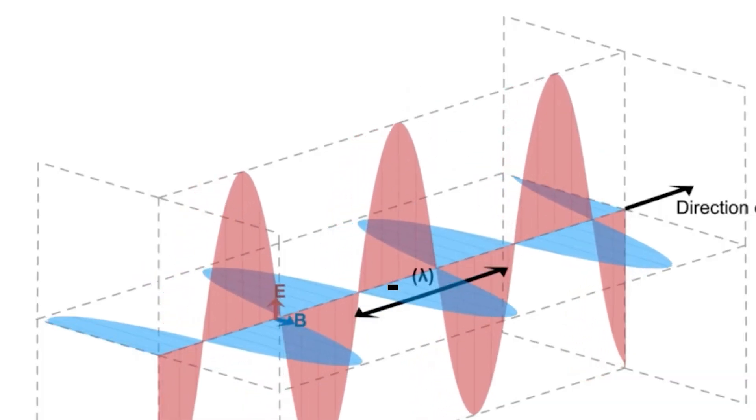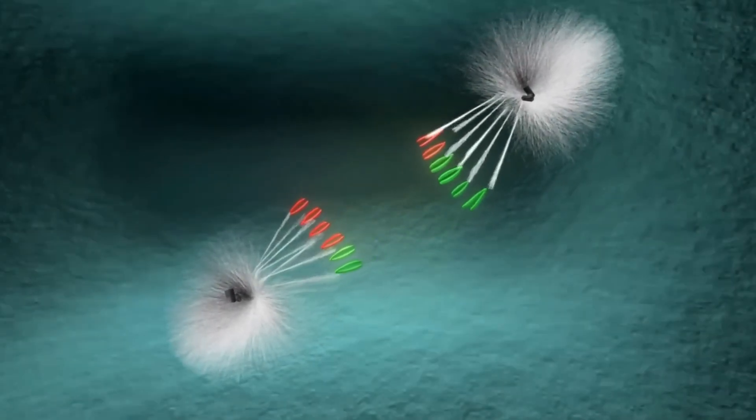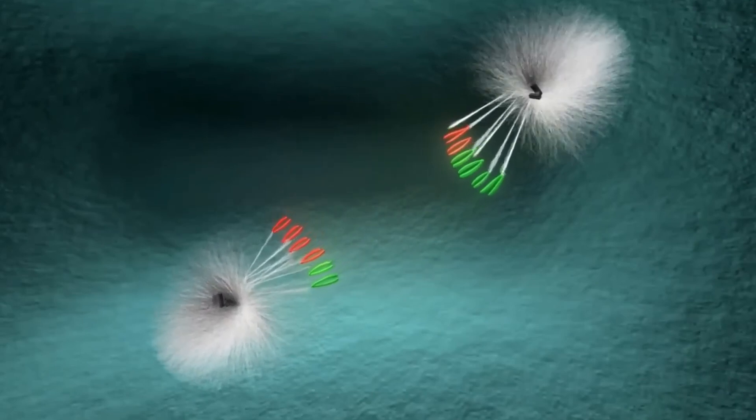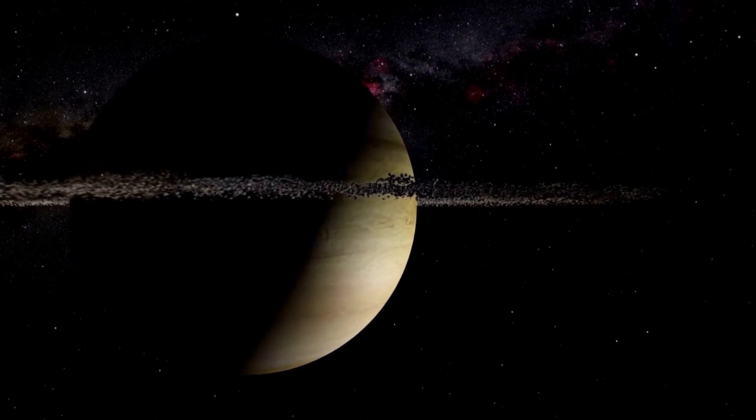These models suggest that Betelgeuse is in the helium-burning phase or perhaps fusing carbon in shells around its core. As the fusion chain proceeds to heavier elements like neon, magnesium, silicon, and eventually iron, the timescales shorten dramatically.